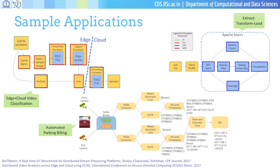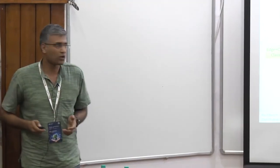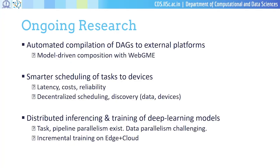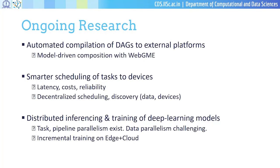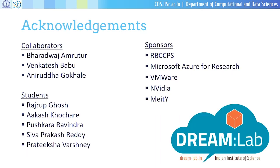We have other deep learning examples as well. The Echo platform is available on our GitHub page. To conclude, there are many interesting possibilities ahead — this is more of a platform play so far, but interesting research is coming: how to compose DAGs so the system automatically figures out which engine to use, how to schedule in an automated fashion, and down the line, how to do distributed training of deep learning models, since that's often the biggest bottleneck. Right now we focus more on the inferencing part. Thanks to all our collaborators, and thank you for your attention.